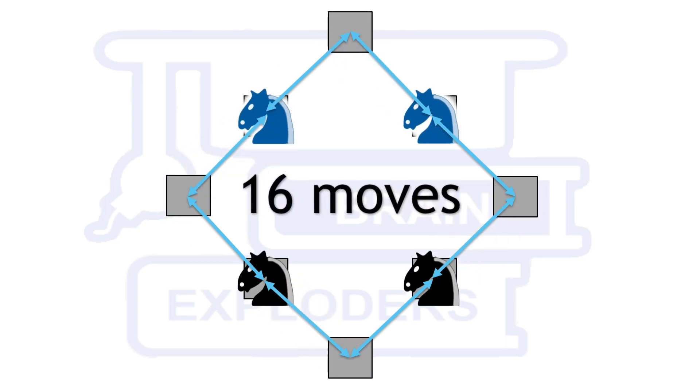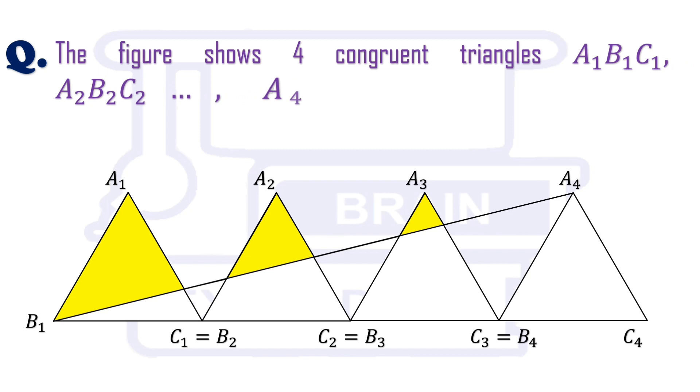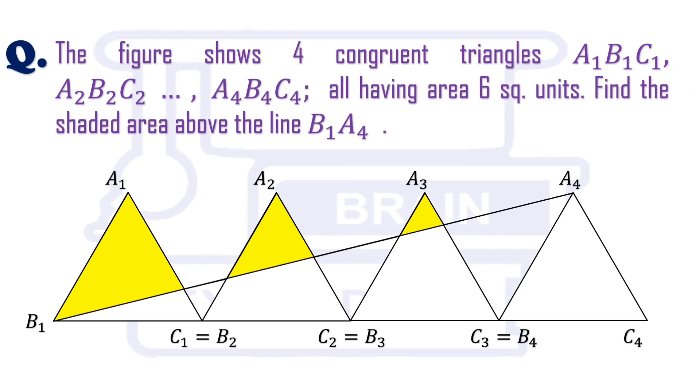Let's move to another question. The figure shows 4 congruent triangles: a1, b1, c1, a2, b2, c2, a3, b3, c3, and a4, b4, c4, all having areas of 6 square units. Find the shaded area above the line b1, a4.